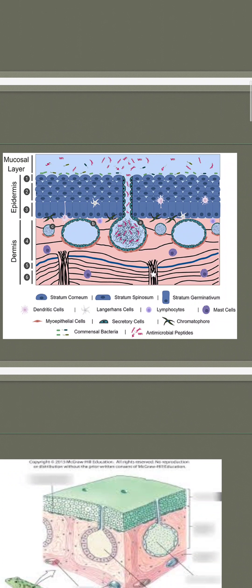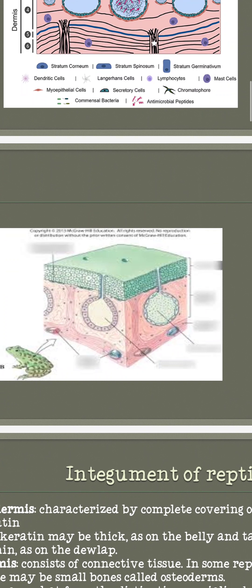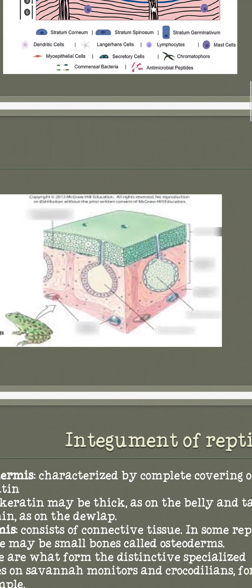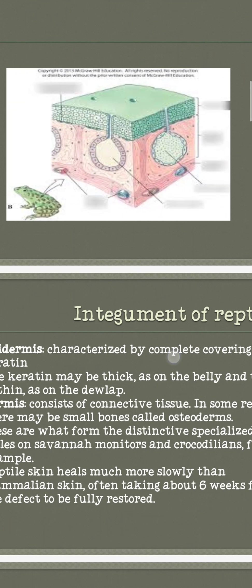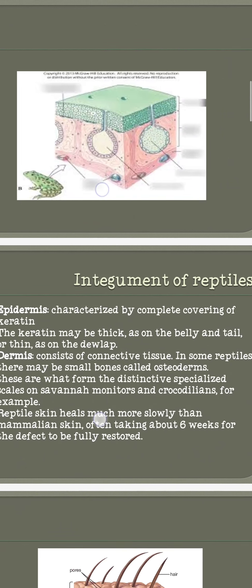After the epidermis, the dermis layer is found. The dermis is living and contains many types of cells — Langerhans cells, lymphocytes, mast cells, and secretory cells. In the diagram of the frog's skin, the green area represents the epidermis and the peach-colored area below represents the dermis.